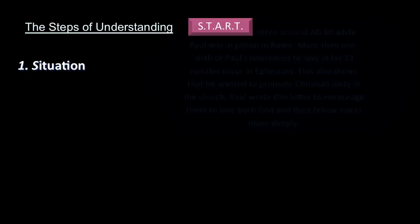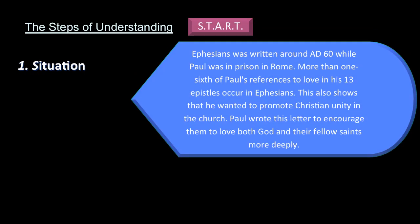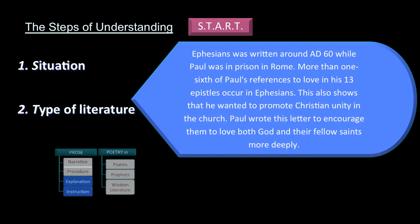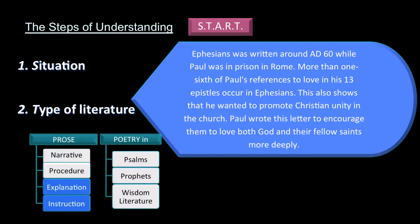Let's look at the situation of the book of Ephesians. Ephesians was written around AD 60, while Paul was in prison in Rome. More than one-sixth of Paul's references to love in his 13 epistles occur in Ephesians. This shows that he wanted to promote Christian unity in the church. Paul wrote this letter to encourage them to love both God and their fellow saints more deeply. The type of literature in Paul is always prose, and the genres will be explanation or instruction.